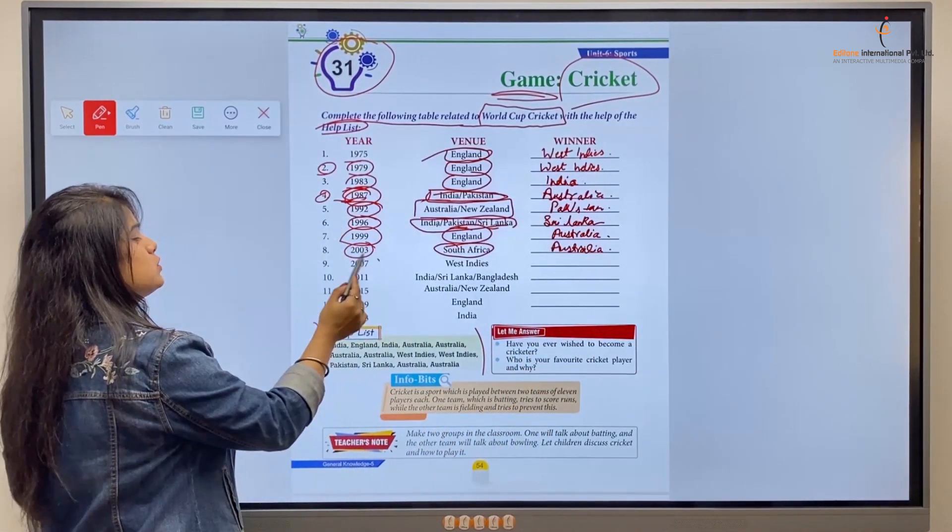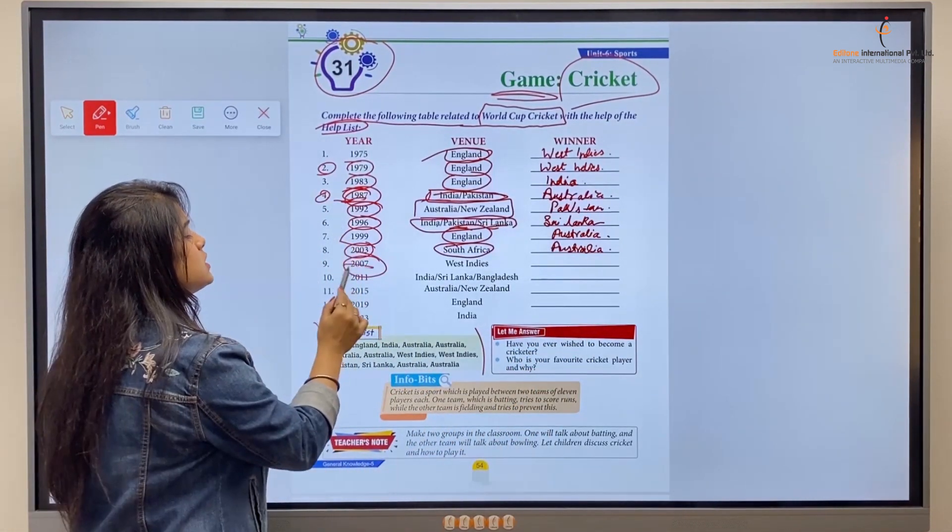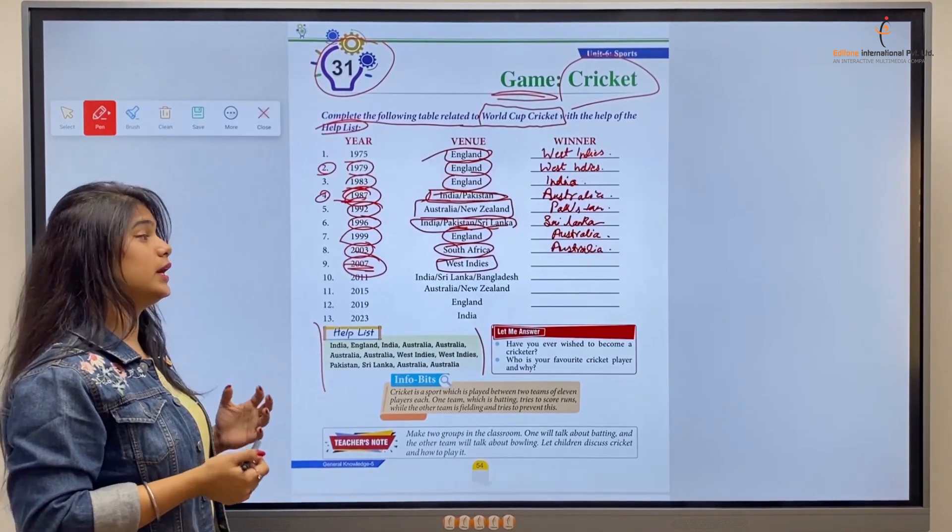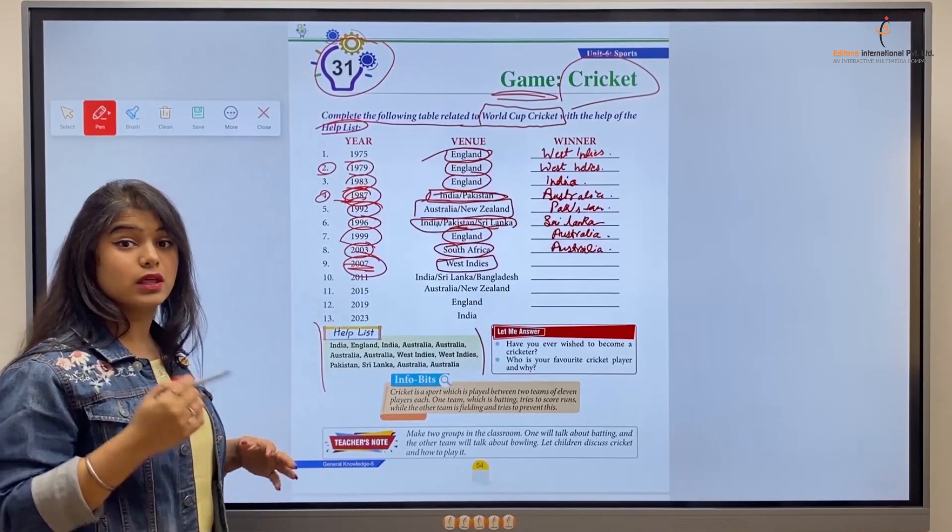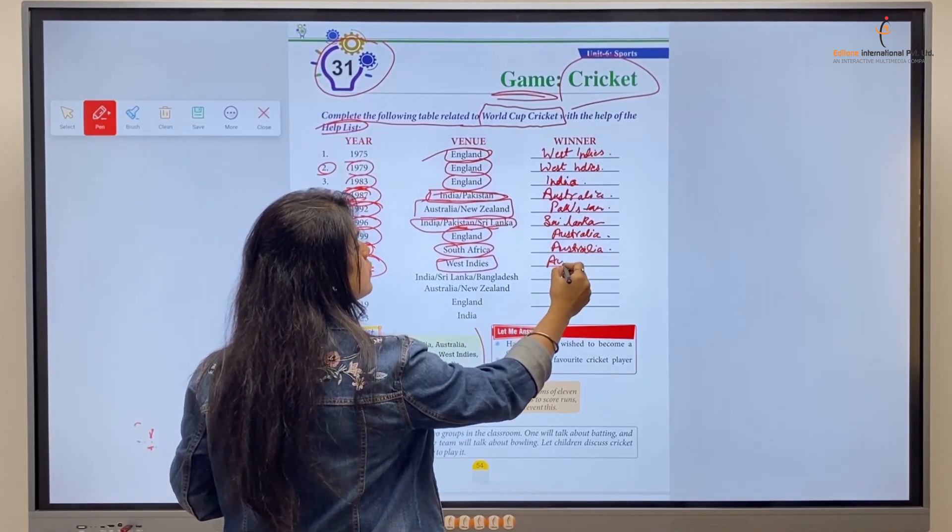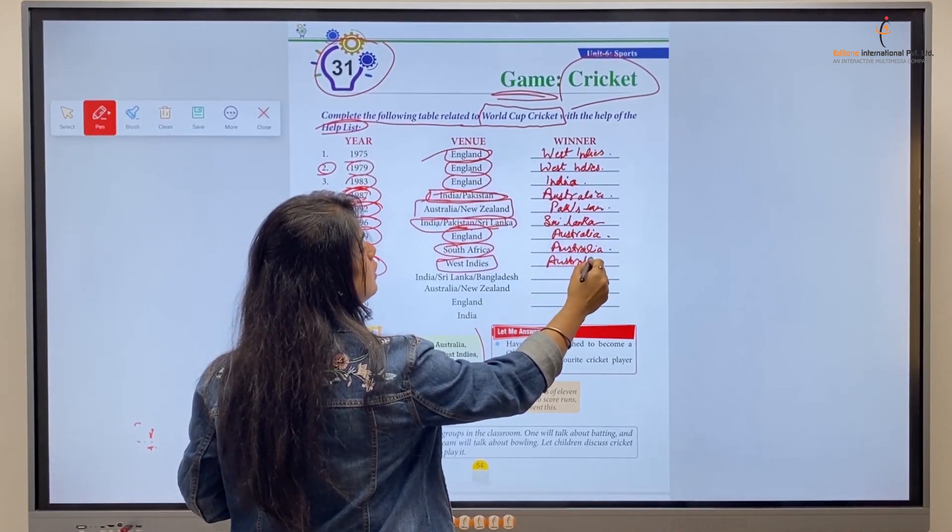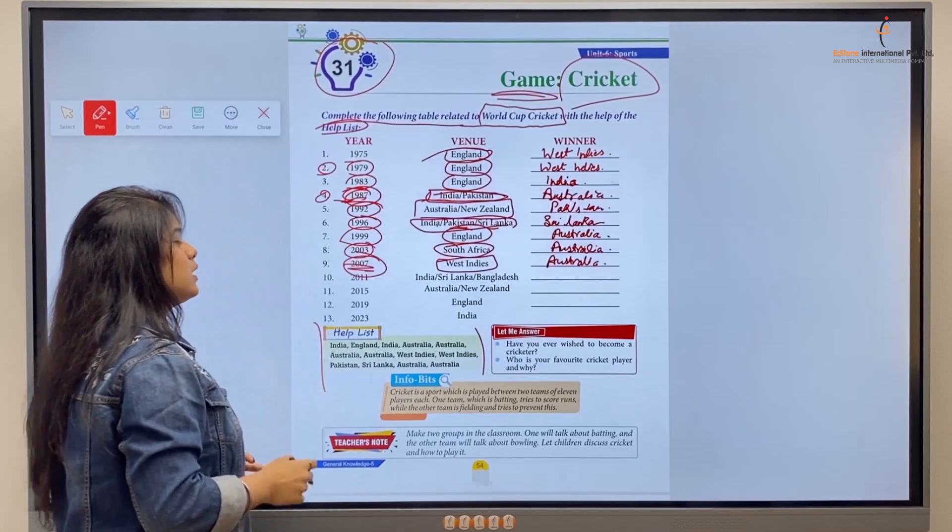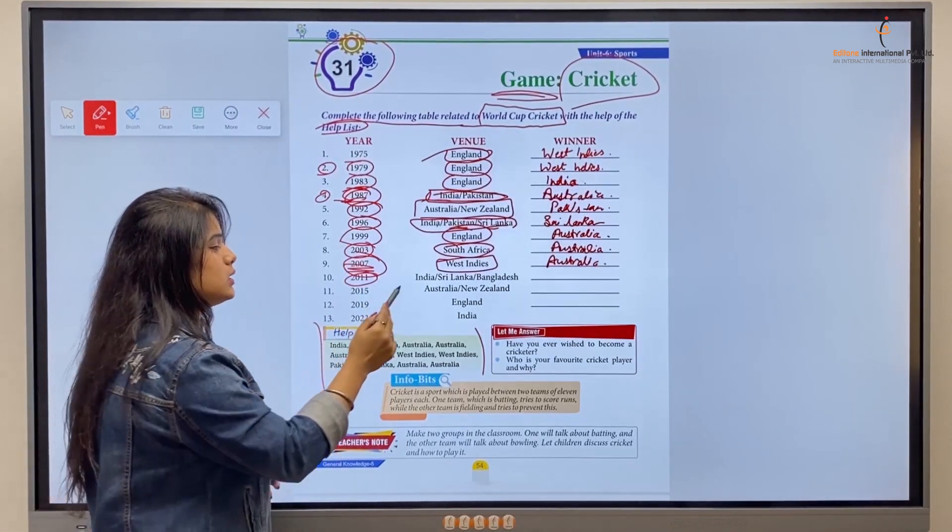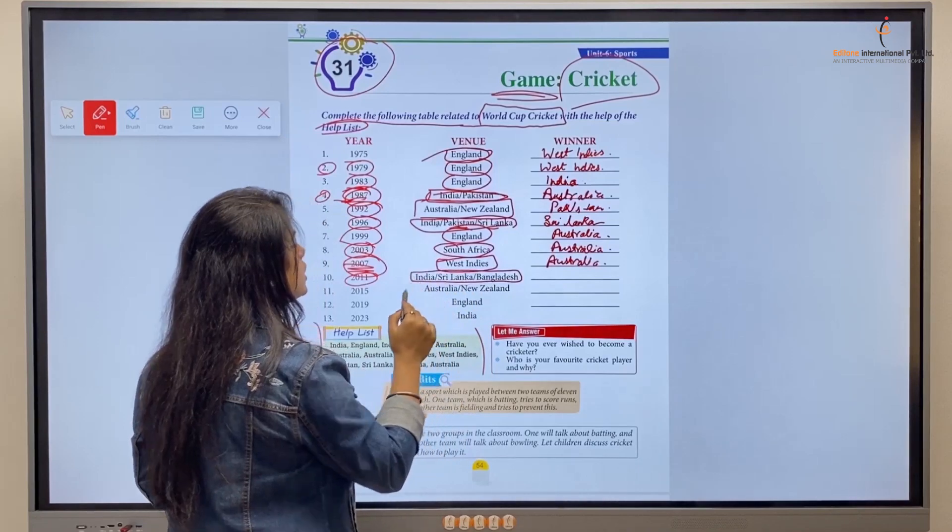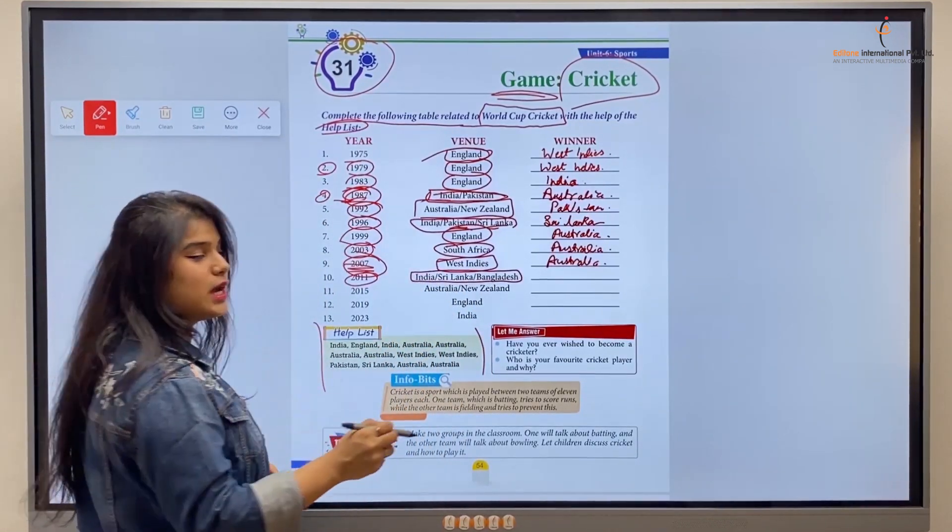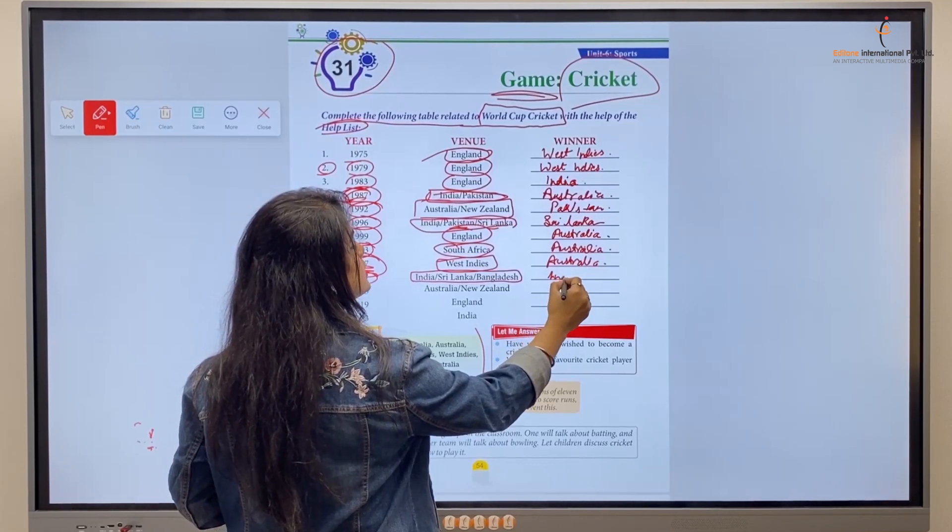Next is year 2007. In 2007, the World Cup was held in West Indies and again the Australian team was the winner, so we'll write Australia. Now next, in 2011, the World Cup was held in India, Sri Lanka, and Bangladesh, and the winner of that World Cup was India, so we'll write India.